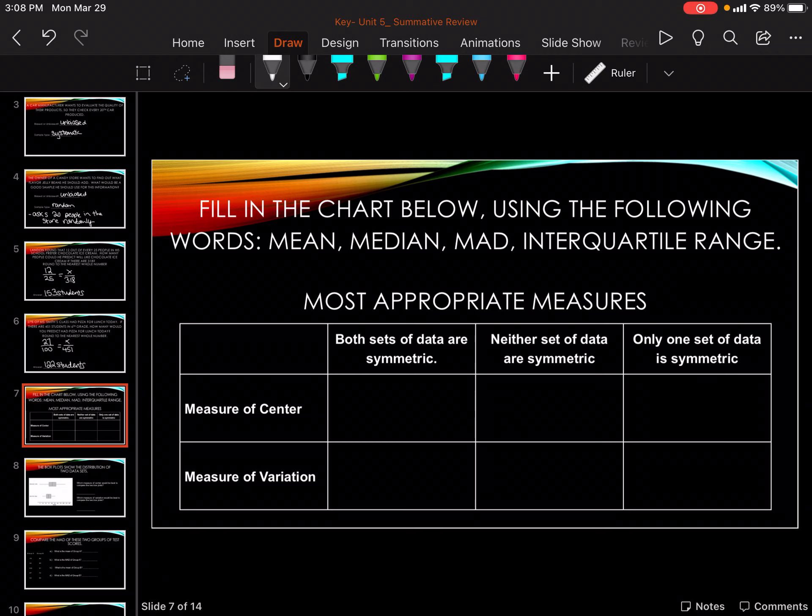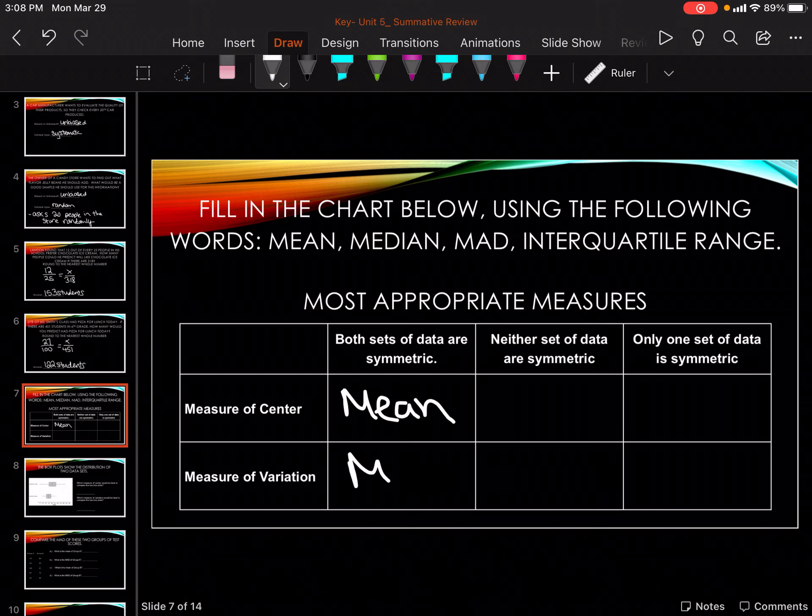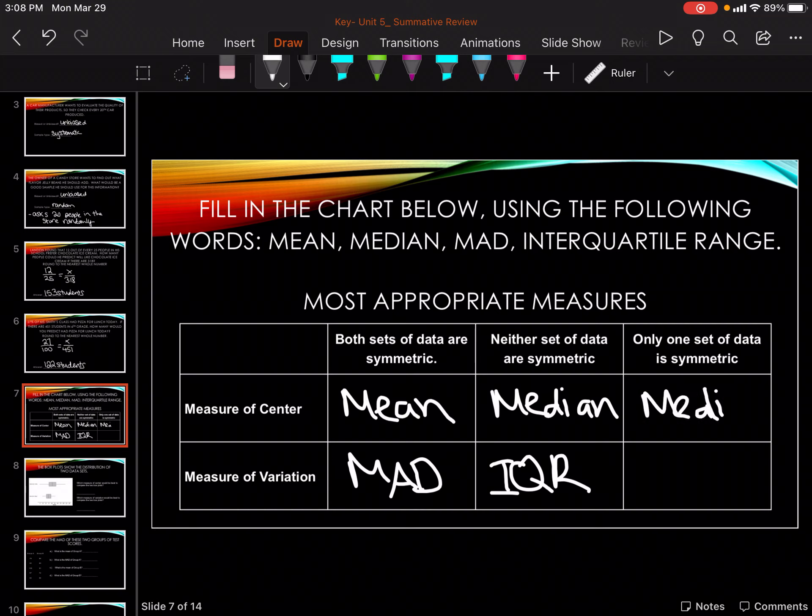Okay, so remember this is based on that chart that you need to have memorized. When both are symmetrical we're going to use the mean and the MAD. If neither are symmetrical we're going to use the median and the IQR interquartile range. Same if only one is symmetrical, median and IQR.